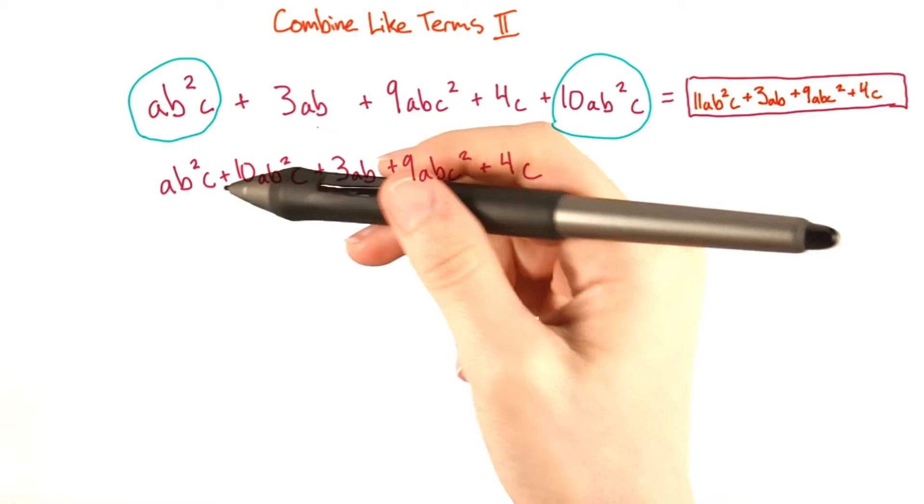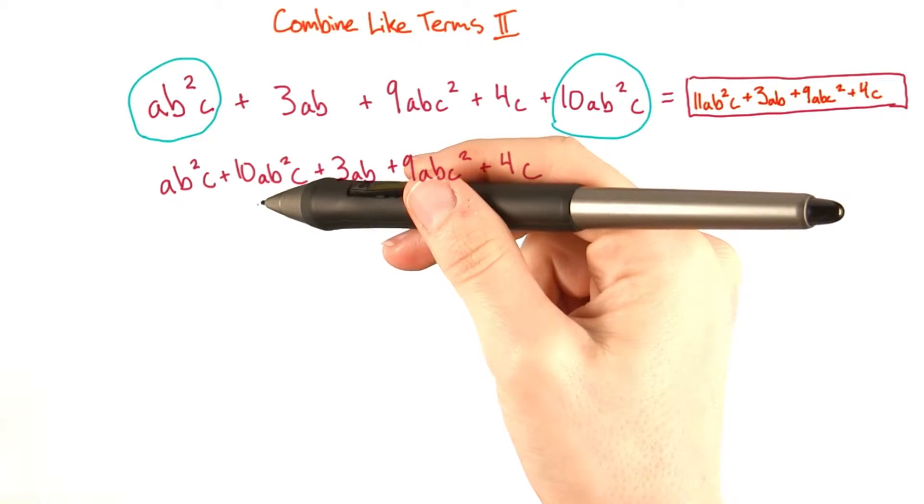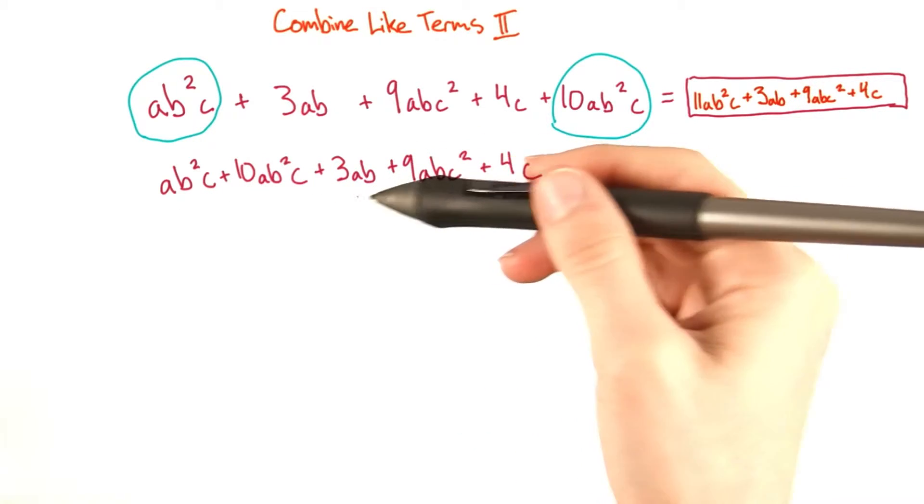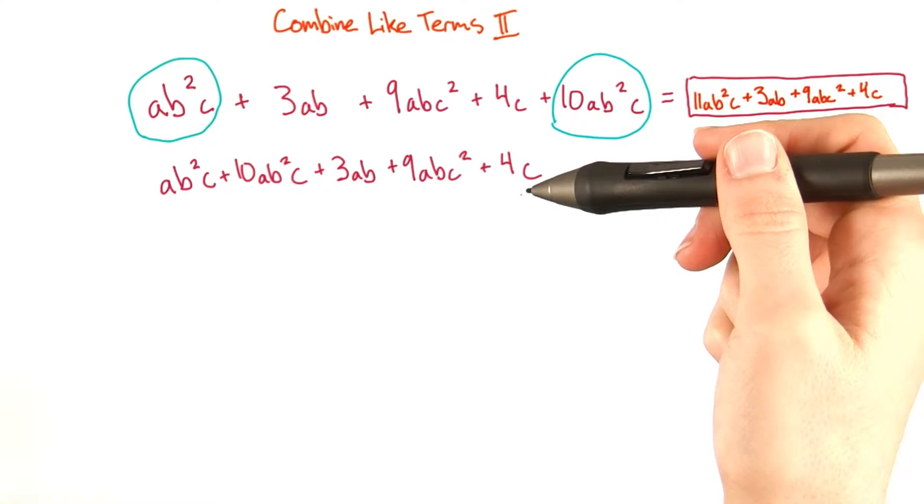So after a bit of rearranging, we get ab squared c plus 10ab squared c plus 3ab plus 9abc squared plus 4c.